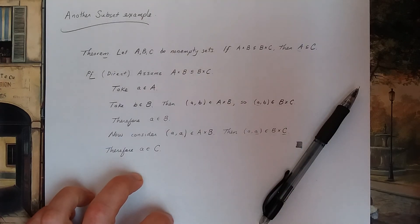Because A cross B is a subset of B cross C, (a, a) has to be in B cross C. What this means is, therefore, the element a has to be in C.